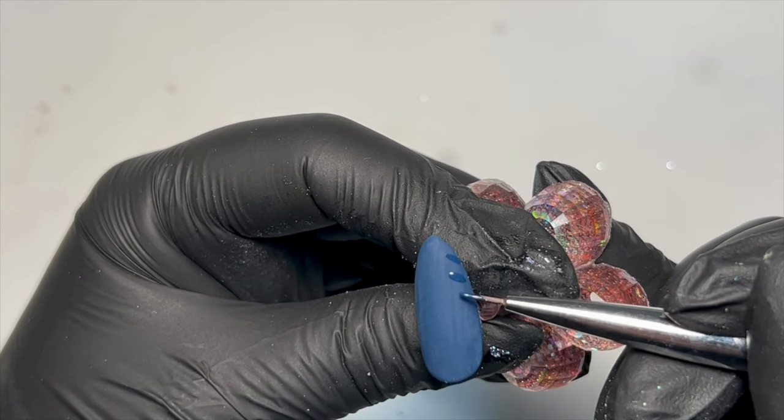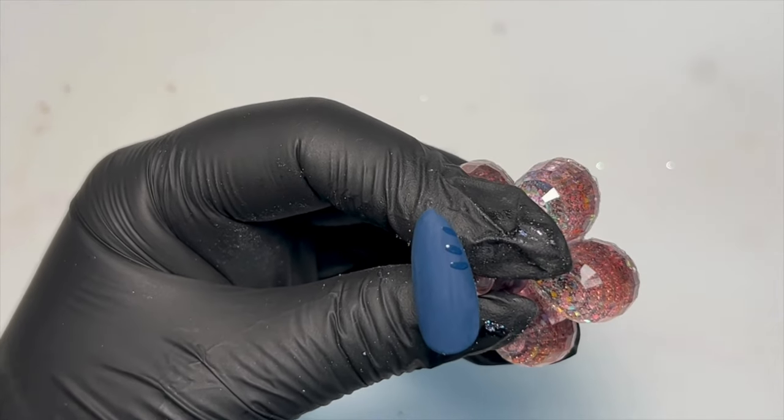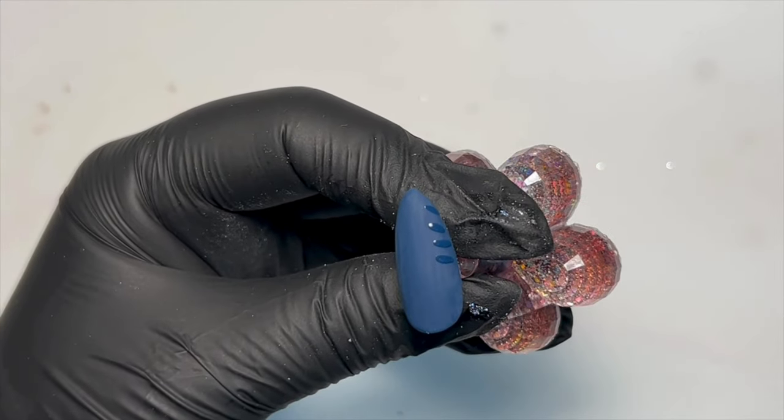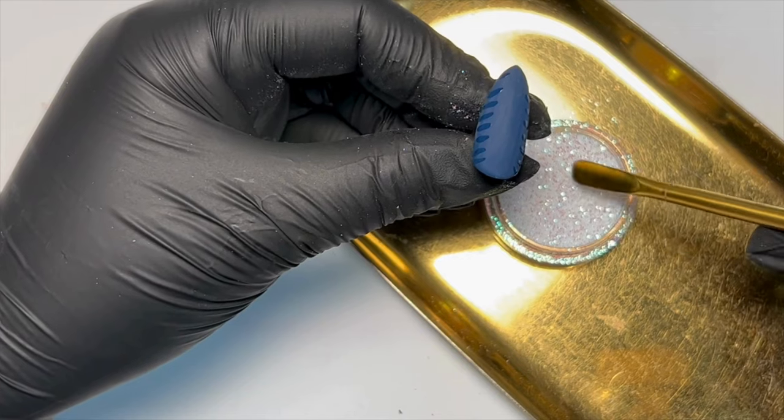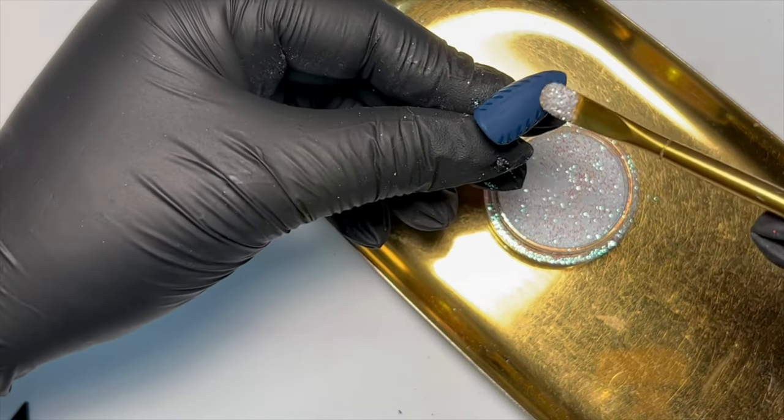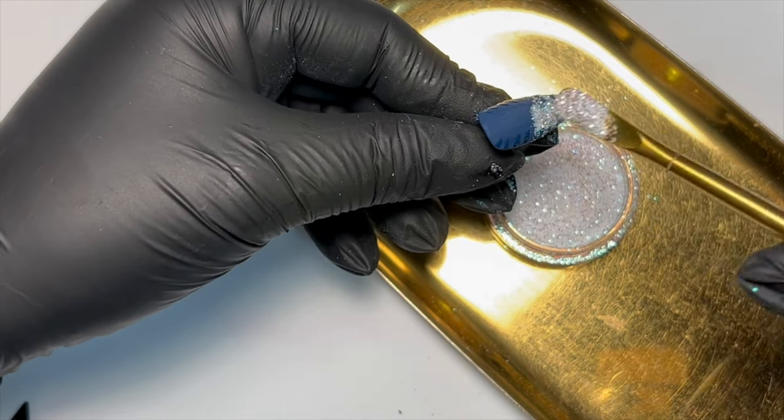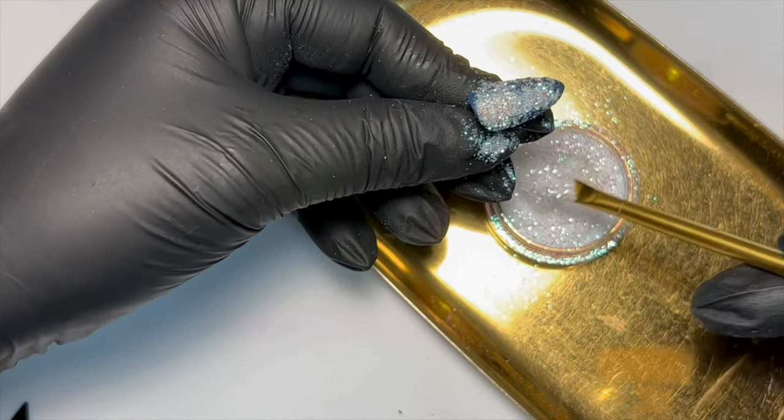I'm going to start by using that same paint in Moonlight and I'm just drawing a couple of diagonal lines down the sides of the nail and then using the Disco Pink glitter I'm going to pack it right on top.